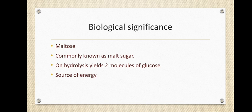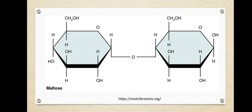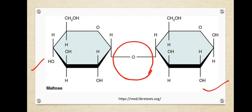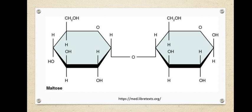Maltose is commonly known as malt sugar and is present in high amounts in germinating seeds. When you eat germinating seeds you get an abundance of maltose. Maltose is formed of two molecules of glucose units and is a source of energy, giving you double the number of glucose molecules when consumed. The structure shows a glucose molecule, a second glucose molecule, and the glycosidic linkage formed between these two glucose units.